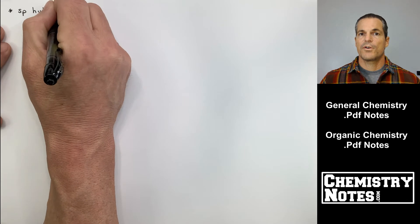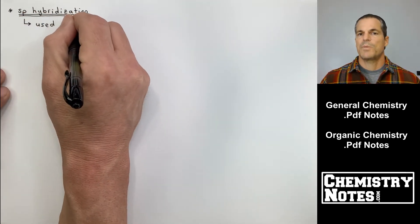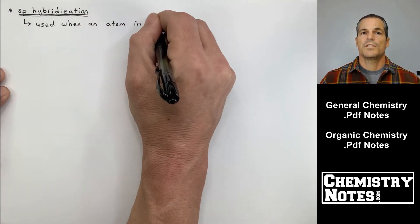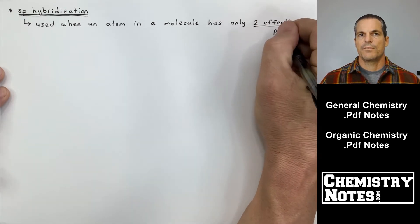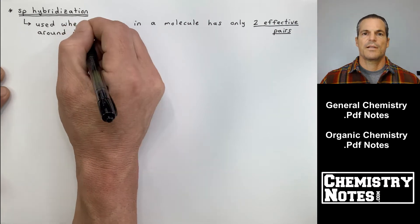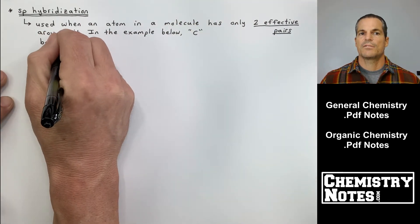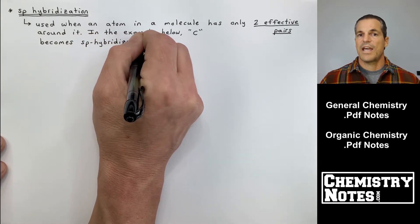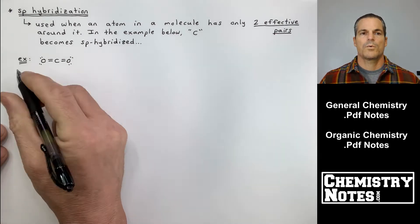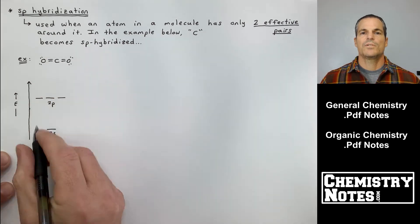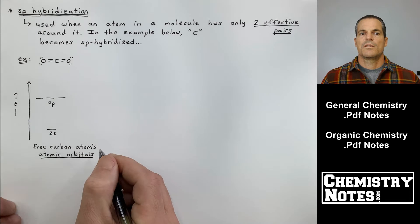Let's move on to our third hybridization. We've talked about sp3 and sp2, and now we're going to talk about sp hybridization. This is used when an atom in a molecule has only two effective pairs attached to it. An effective pair can also be a lone pair. In the example below, carbon is going to become sp hybridized. The example is carbon dioxide — looking at its Lewis structure, carbon has two attachments, two effective pairs, so I want two identical ways to bond to each of those oxygen exterior atoms.